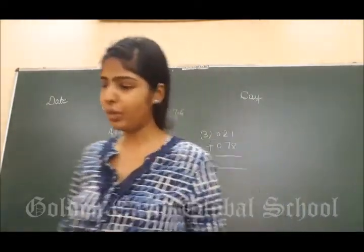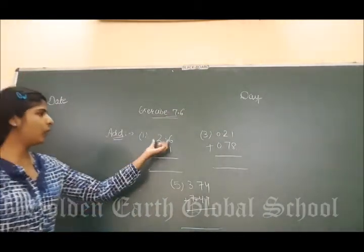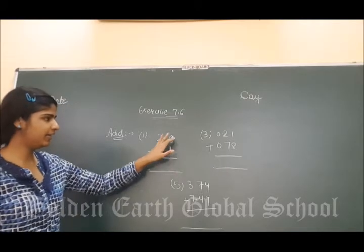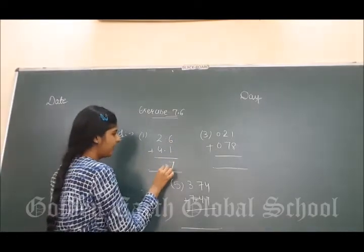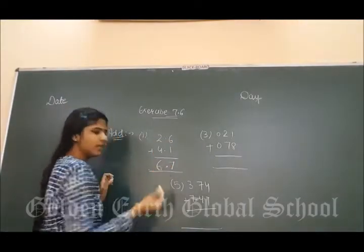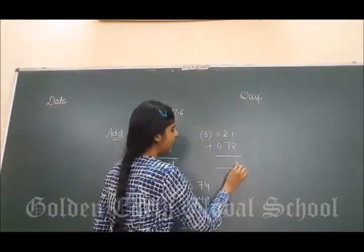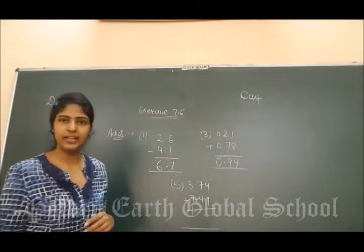First question is, you have to solve on your books, page number 118. Add 2.6 and 4.1. Decimal ke right wale jo addition hai, wo decimal ke baad hi rahegi. Just say, 6 and 1 is 7, 2 plus 4 is 6. Third is 1 plus 8 is 9, 2 plus 7 is 9, 0 plus 0 is 0. Clear?